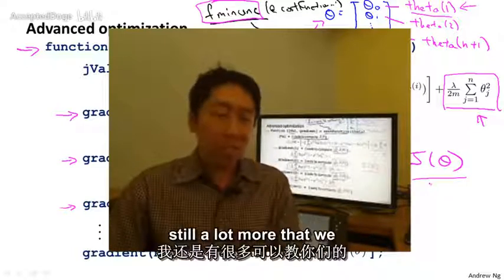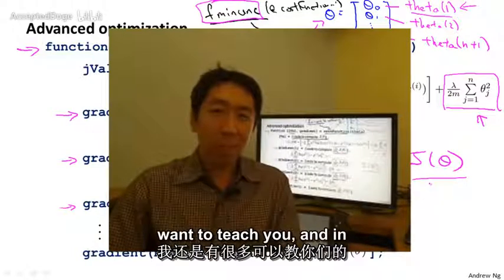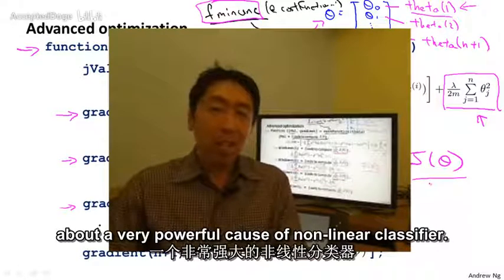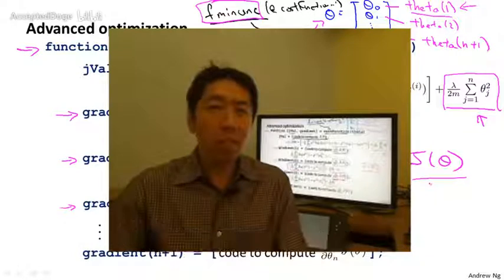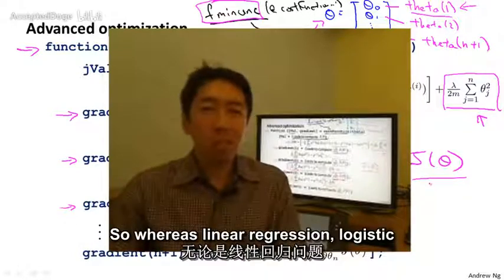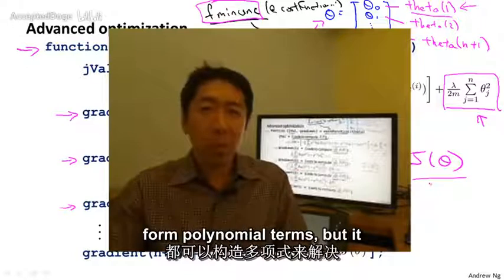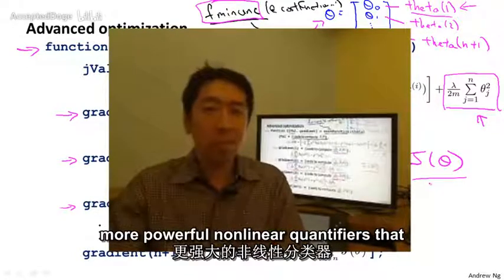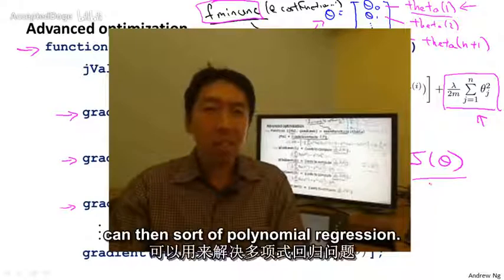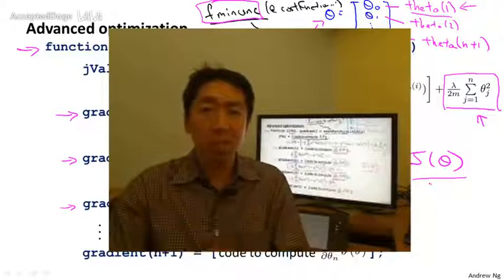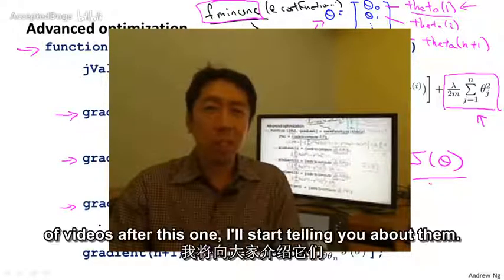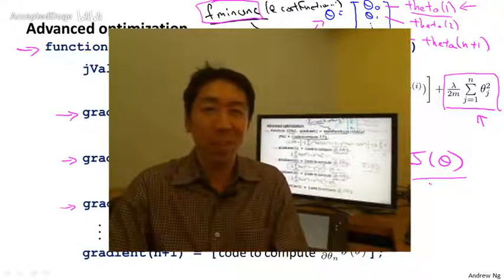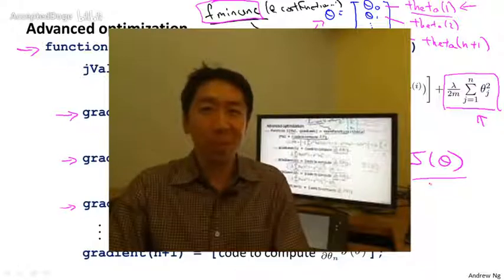But of course, there's still a lot more that we want to teach you, and in the next set of videos after this, we'll start to talk about a very powerful class of nonlinear classifiers. So whereas linear regression, logistic regression, you can throw in polynomial terms, but it turns out that there are much more powerful nonlinear classifiers than polynomial regression. And in the next set of videos after this one, I'll start telling you about them so that you have even more powerful learning algorithms than you have now to apply to different problems.